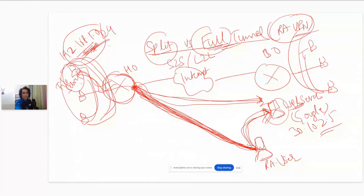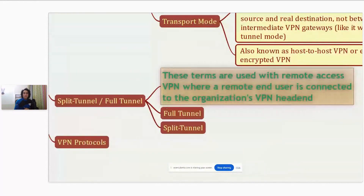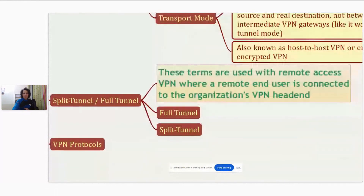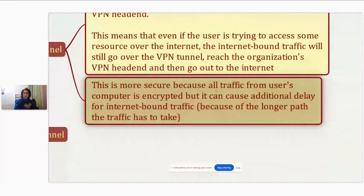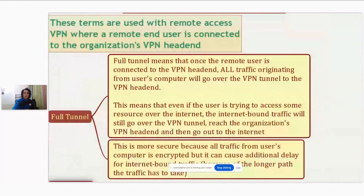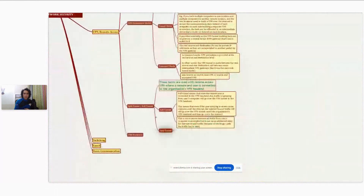These terms — split tunnel and full tunnel — are used with remote access VPN, where a remote end user connects to the organization's VPN head end. Full tunnel means all traffic from the user's computer goes over the VPN tunnel. Even internet-bound traffic goes through the VPN head end before going out to the internet. This is more secure because all traffic is encrypted, but it can cause additional delay for internet-bound traffic due to the longer path.